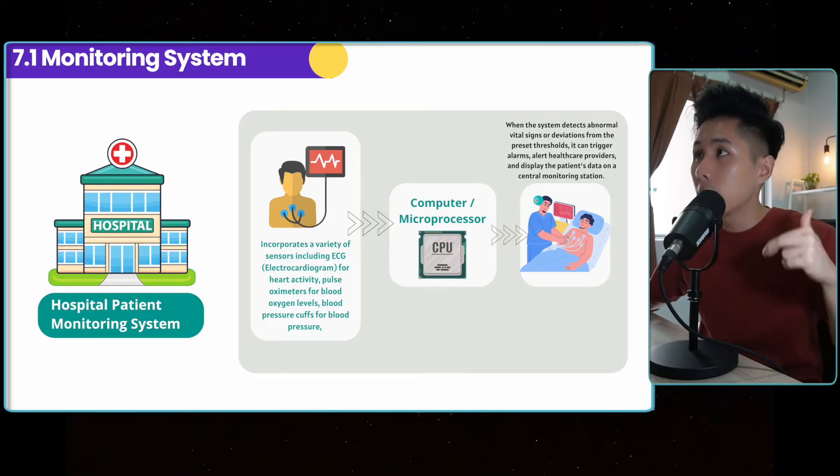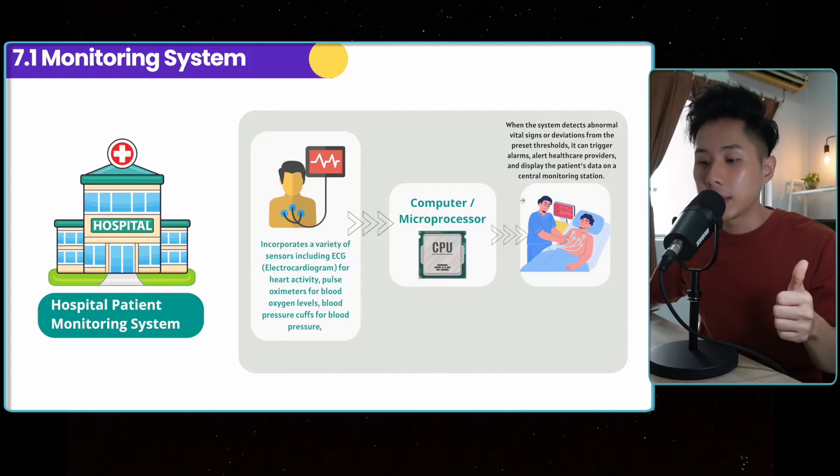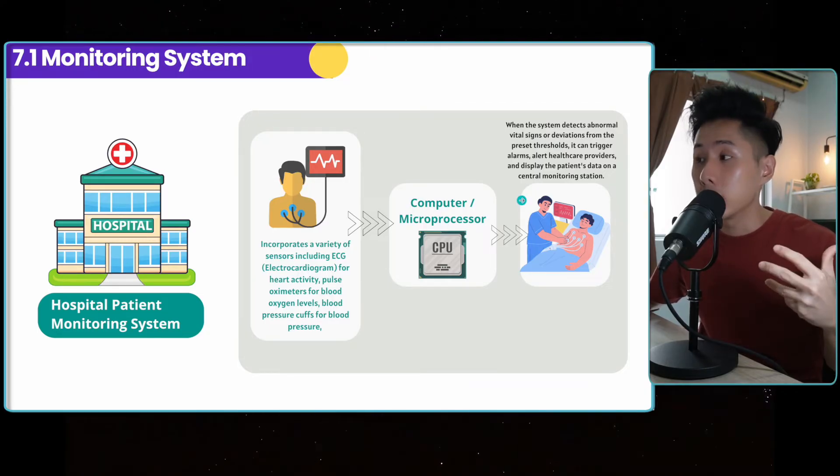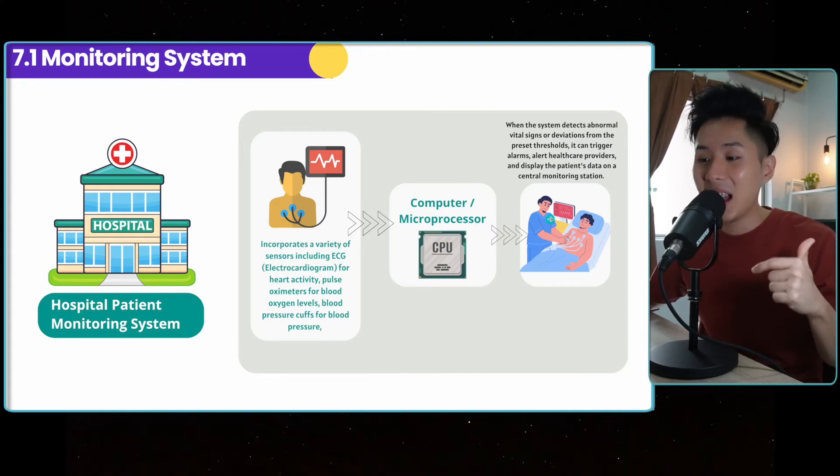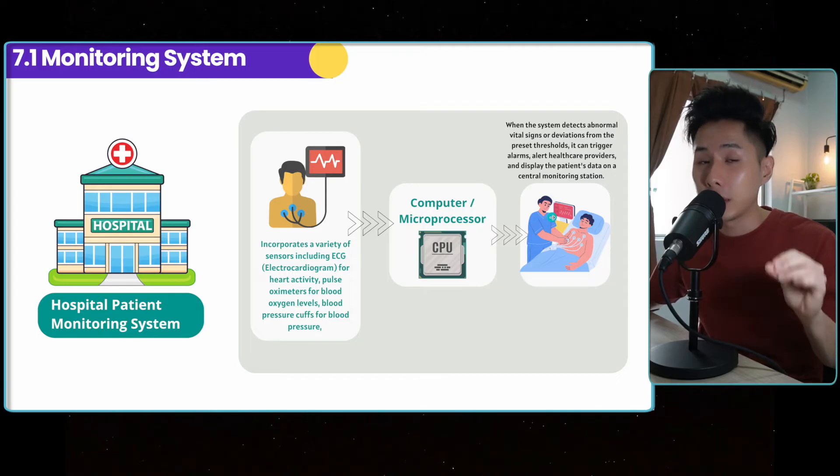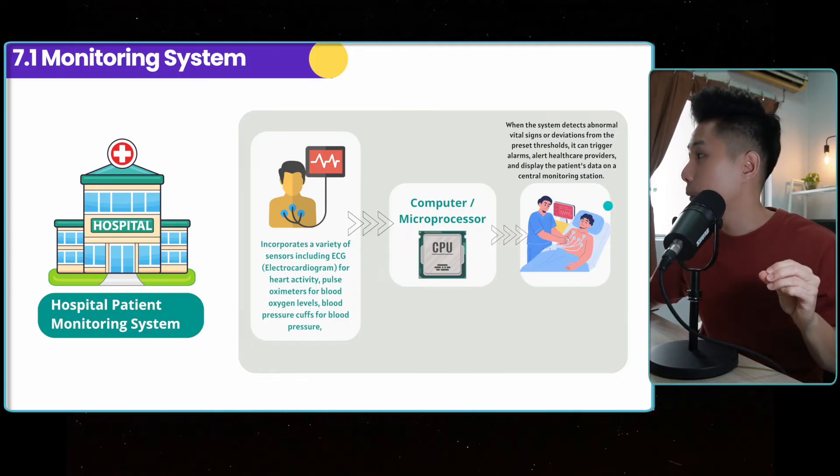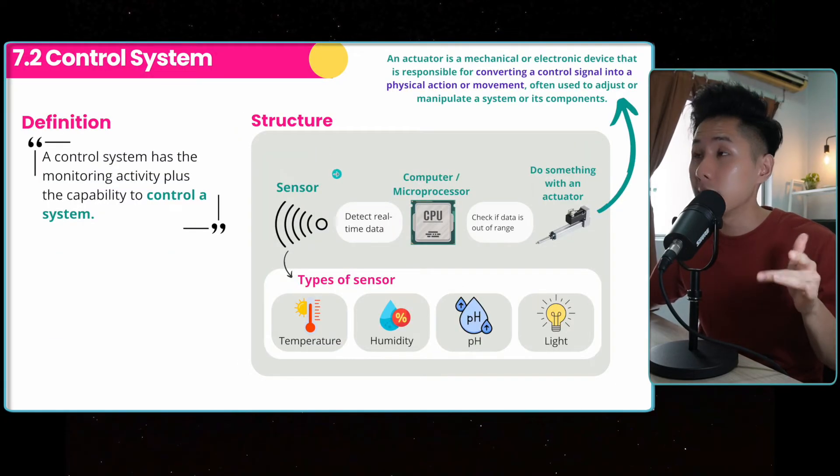But if you look into all these examples so far, what they do is that they will only give you a warning, but they don't really do something. In this example, the system doesn't actually help the patient. They're just providing a warning for the doctors and nurses. This is why monitoring control system comes in.